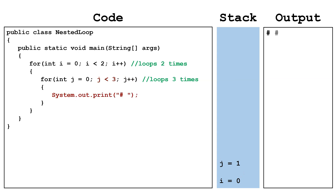Then we check: is j less than three? It is, so we keep going. Inside the body, we print off another pound and space. We get to the end of the inner loop and increment j by one — j becomes two. We check: is j less than three? It is, so we keep going. We print off another pound and space. We get to the end of the inner loop and increment j to three. Next, we check: is j less than three? It is not, so we terminate the inner loop, and that pops the j variable off the stack. We get to the end of the outer for loop, which means we increment i by one — i becomes one.